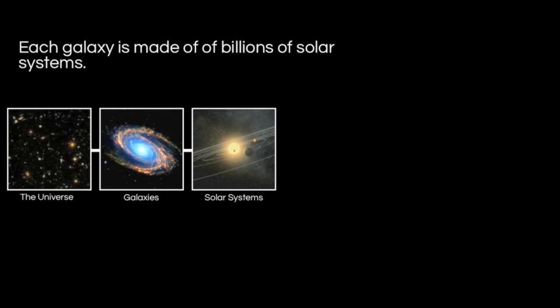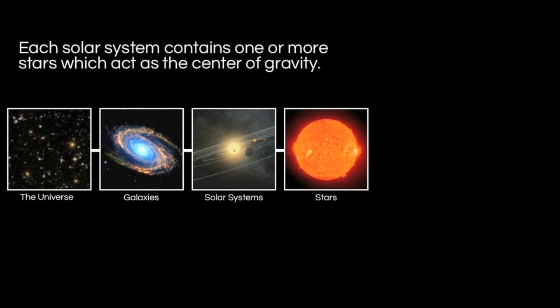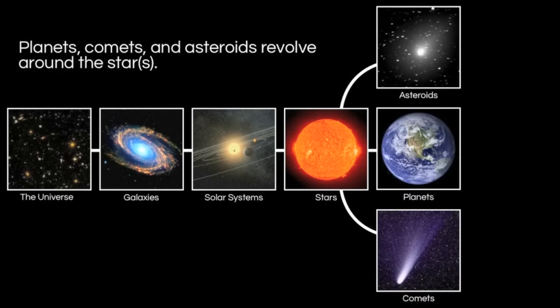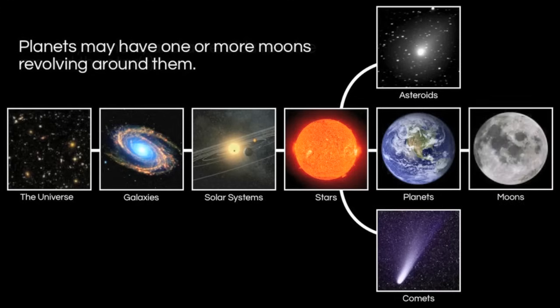Each galaxy, we think, has billions of solar systems in it. Each solar system contains one, sometimes more than one, star, which acts as the center of gravity for that solar system. In our solar system, the sun is our center of gravity and everything orbits it. Stars are generally orbited by planets, asteroids, and comets, which all move around stars. And finally, planets may or may not have one or more moons orbiting around them. So you see this flow from large to small: universe, then galaxies and solar systems and stars, then smaller objects like planets, asteroids, comets, and moons.